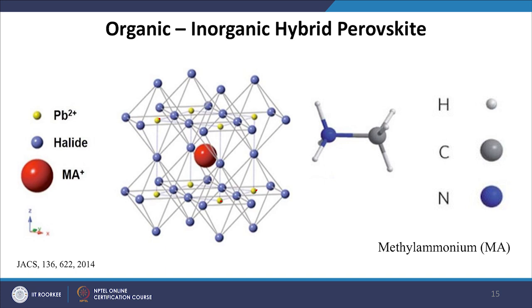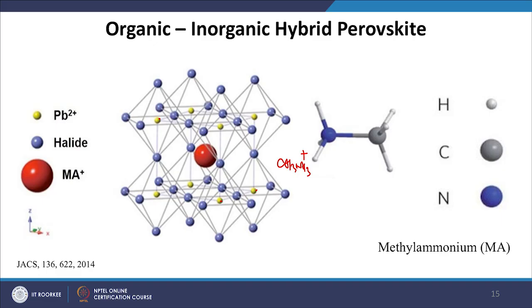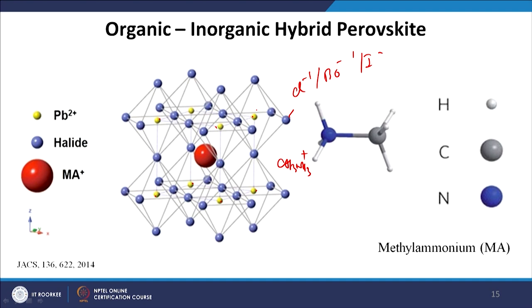In the crystal structure of CH3NH3PbI3, we have an orthorhombic crystal structure. In the center there is the big MA cation, which is CH3NH3+, the yellow circular balls are the halide atoms — chlorine, bromine, or iodine — and the lead Pb2+ ions are also present. MA is the larger cation. In addition to the electronic nature, there is also an ionic contribution. It has been proposed that MA cations percolate, diffuse, or migrate in the crystal structure when light falls on it — this phenomenon is commonly known as ion migration.